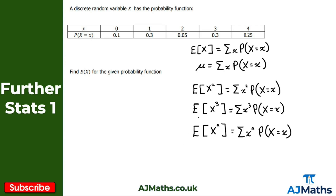It generally doesn't matter past the expectation of x squared, but it is important to be aware of the general result. We'll need the expectation of x squared in the next video for finding the variance of a discrete random variable. Now let's take a look at an example where we find the expectation of x for a given probability function.